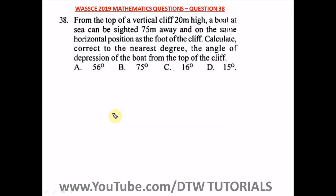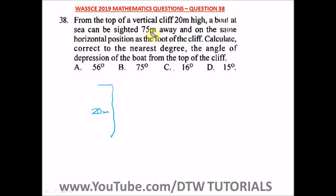This is question 38 of the WAEC 2019 Mathematics past question. It says: from the top of a vertical cliff 20 meters high, a boat at sea can be sighted 75 meters away.